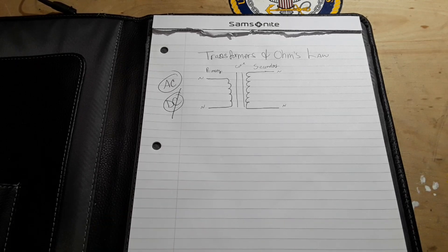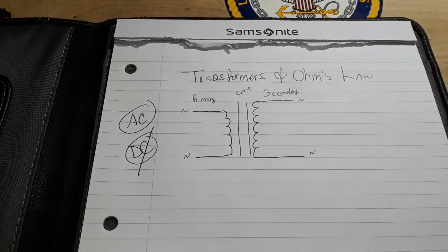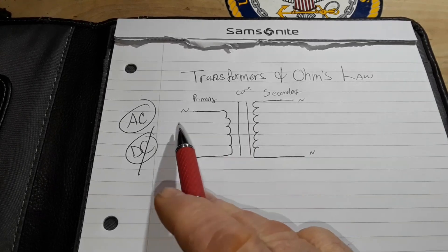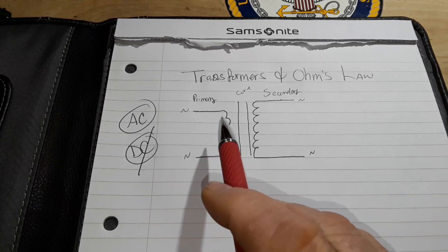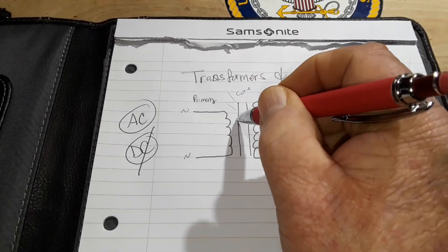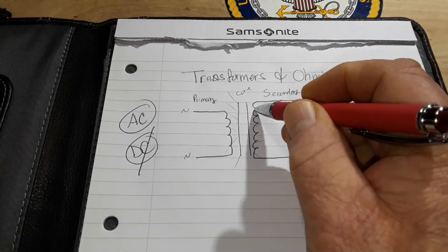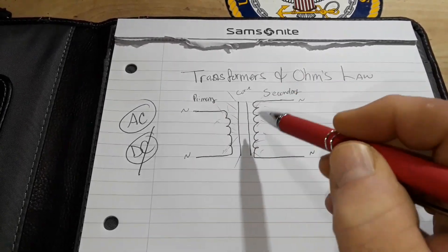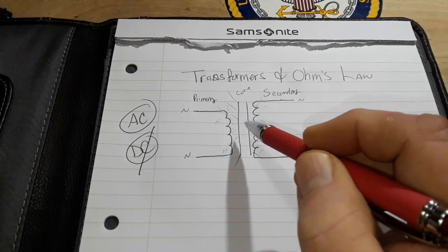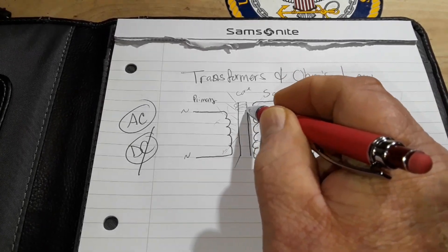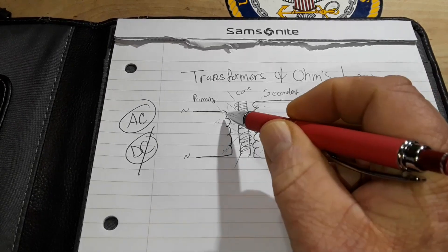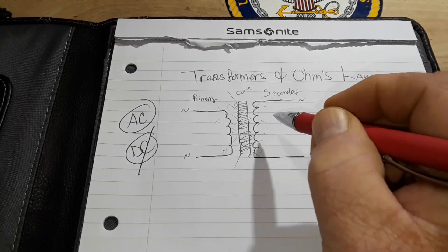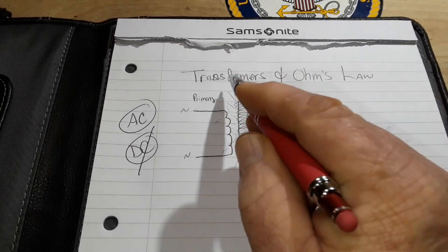Let's zoom in. So here we have our transformer with our primary secondary. We have an iron core in the center. Now, when our alternating current passes through the primary coil, it creates a magnetic field in the iron core. It also creates a magnetic field around itself and around here, but mainly in the iron core. Now, this magnetic field that has been created